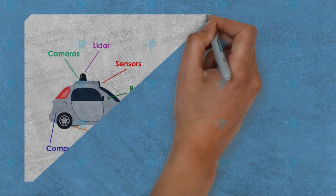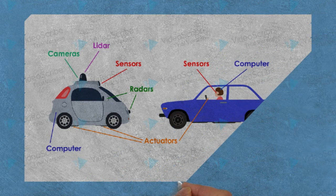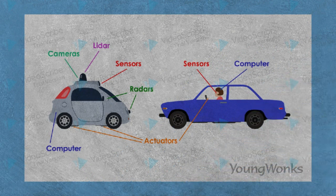Now let's have a look at a car and an automatic driverless car. In a normal car, the human being's eyes work as the sensor and the brain works as the computer.